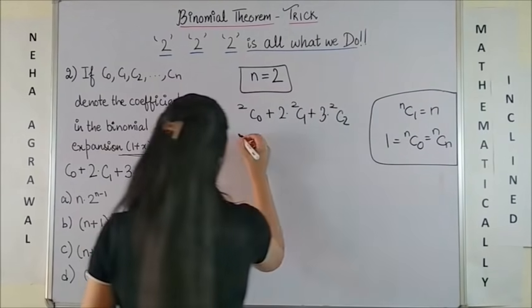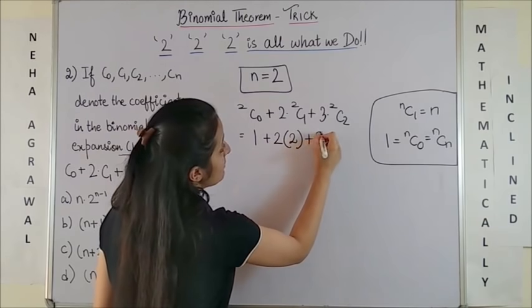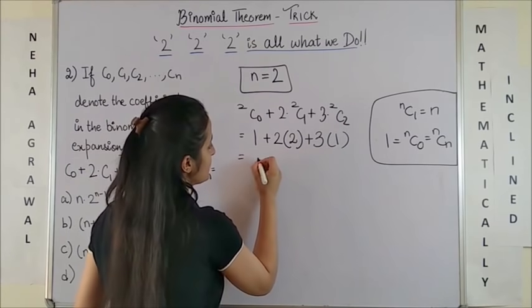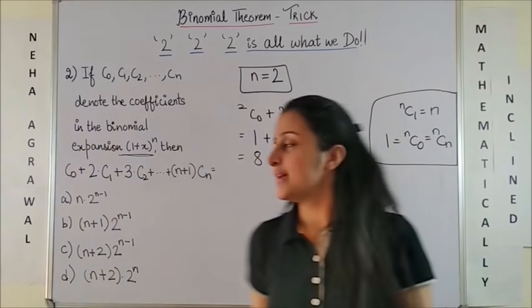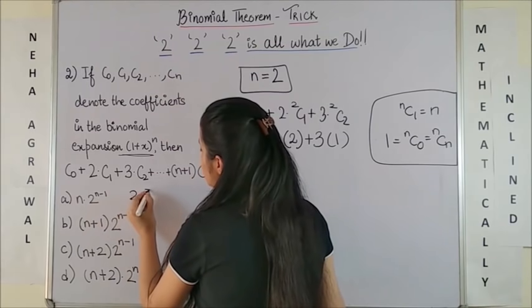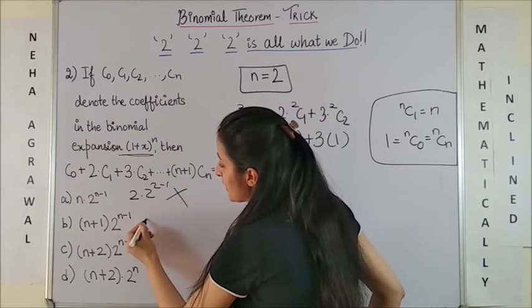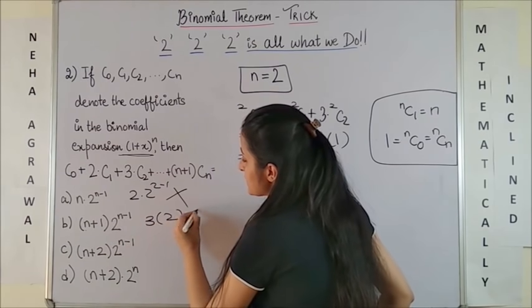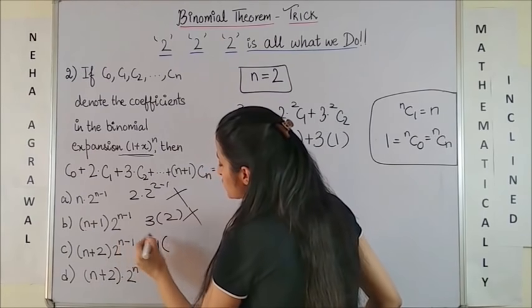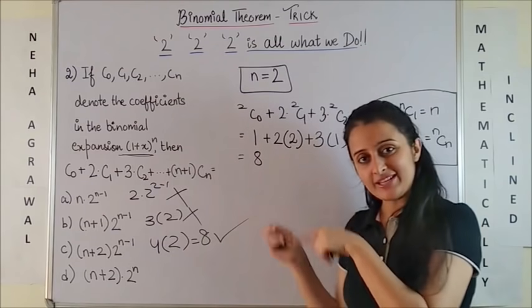Now, simplifying this very quickly, 2c0 obviously has to be 1 plus 2 times 2c1 is 2 plus 3 times 2c2 would be again 1. So on simplifying, this is 1 plus 4 plus 3. So answer is 8. Now all you need to do is get that answer 8 from the options. So this will be 2 into 2 raised to power 2 minus 1 would certainly not give us an 8. This will be 2 plus 1, that's 3 into 2, that gives us 6, certainly not the answer. Third, 2 plus 2 gives us 4 into 2 raised to power 2 minus 1 is 8 and bingo, that's the answer.